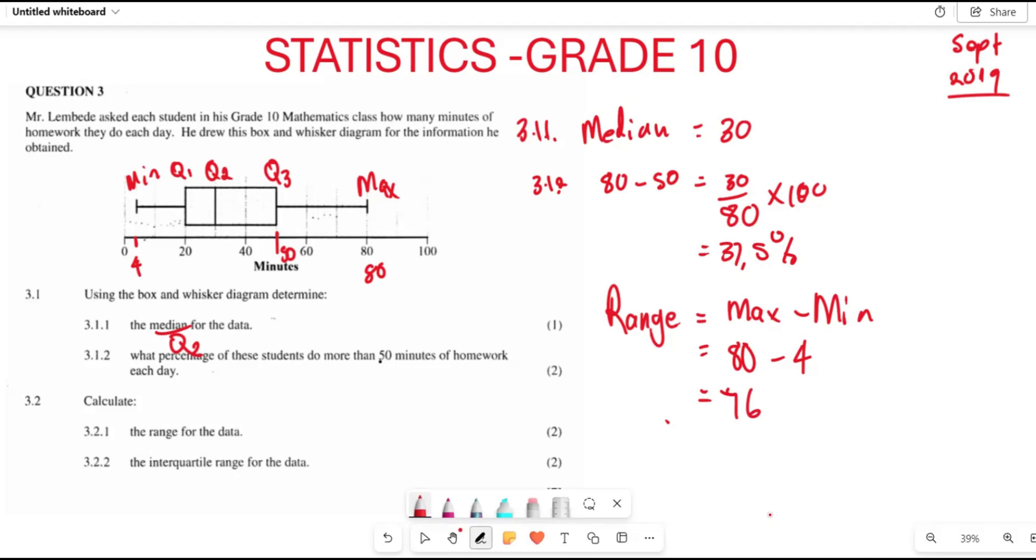Question 3.2.2 wants us to find the IQR, the interquartile range. It's always given by Q3 subtract Q1. Your Q3 is 50 and your Q1 is 20.